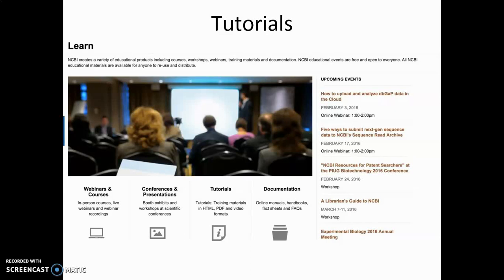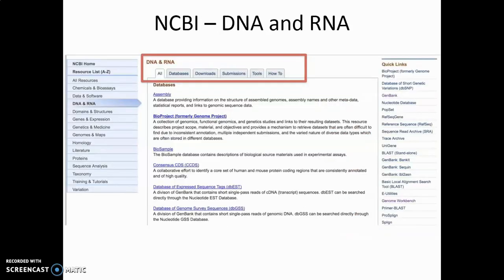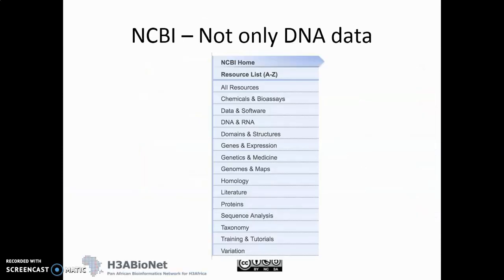What I've done now is clicked in the left panel on the 'DNA and RNA' category. The page shows a list of tools, databases, and ways of analyzing and accessing DNA and RNA data. The first tab shows all the resources, the second tab lists databases that store DNA and RNA information and how to download this data, and the next tab covers submissions.